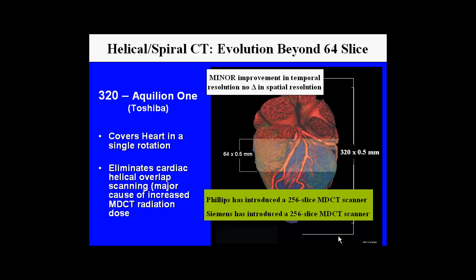Toshiba has recently introduced the 320-slice scanner, which provides entire coverage of the heart in a single rotation. This is very important because it eliminates cardiac-helical overlap, which is a major cause of increased radiation dose for multi-detector CT scanning. Philips has also introduced a 256-slice scanner, and Siemens has introduced a 256-slice multi-detector scanner.